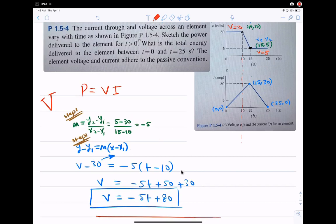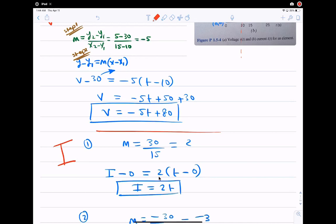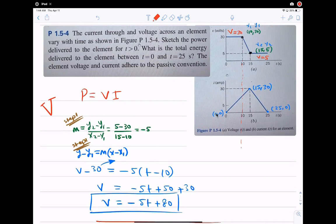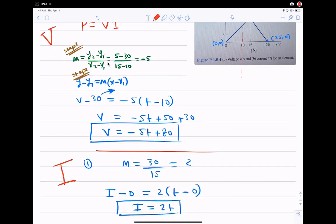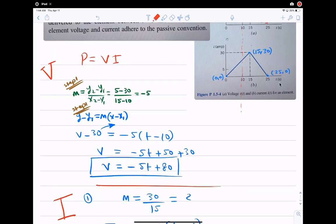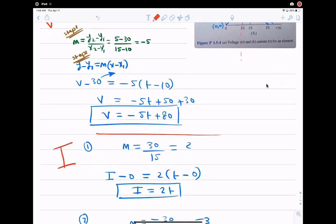Now I plug in for the m is 2. M is 2, and I will pick one of these two points. I would rather pick the 0, 0, it's easier. So I'm going to plug in for the y1, 0, the x1, 0, and the y, we said here the y is I, and the x-axis is T. So the x is t. So I plugged in for the y, I. Y1, it's a 0, equal to 2, which I already found in step 1, times t, which is x, minus x1 is 0. I equal to 2t.